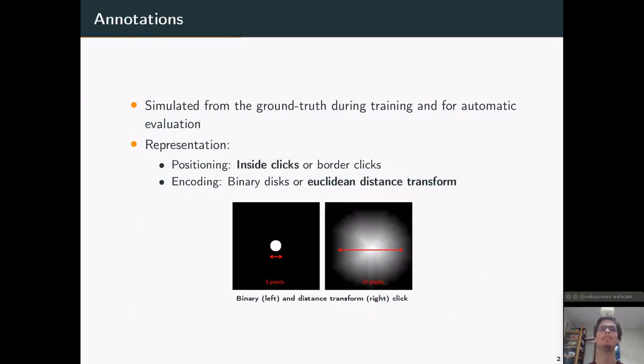I now delve into the details of the annotations which really are at the core of our framework. They are simulated from the ground truth during training and to automatically evaluate it. So on one hand during training, to let the neural network learn how to be guided by these annotations. And on the other hand, for automatic evaluation, to automatically test if our framework works.